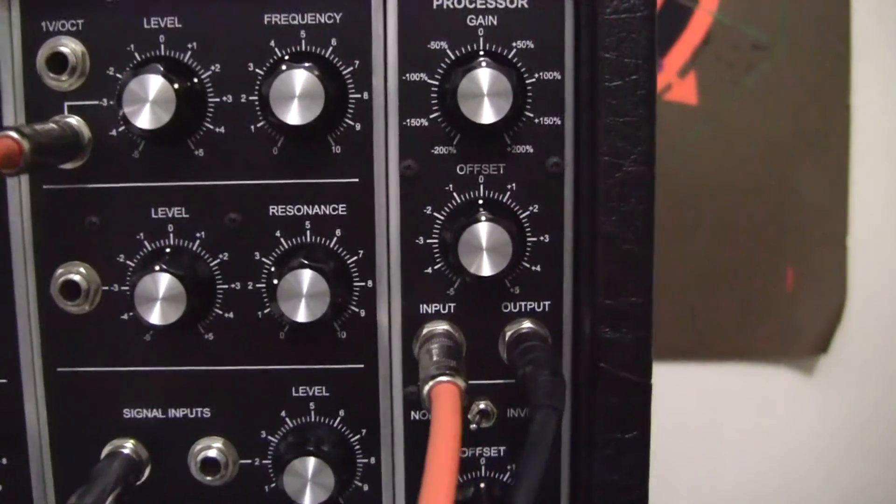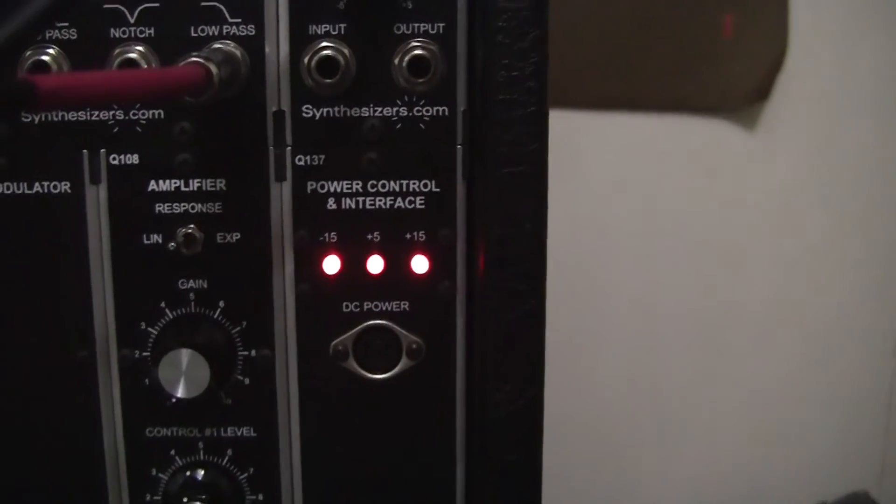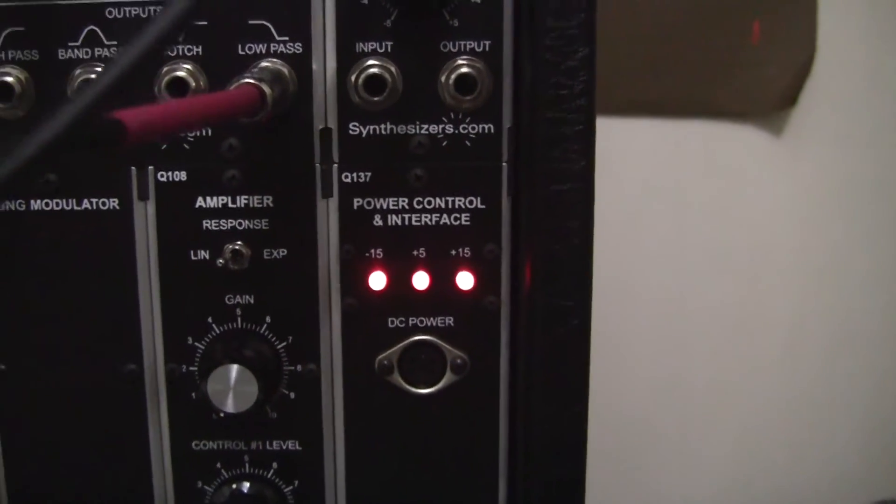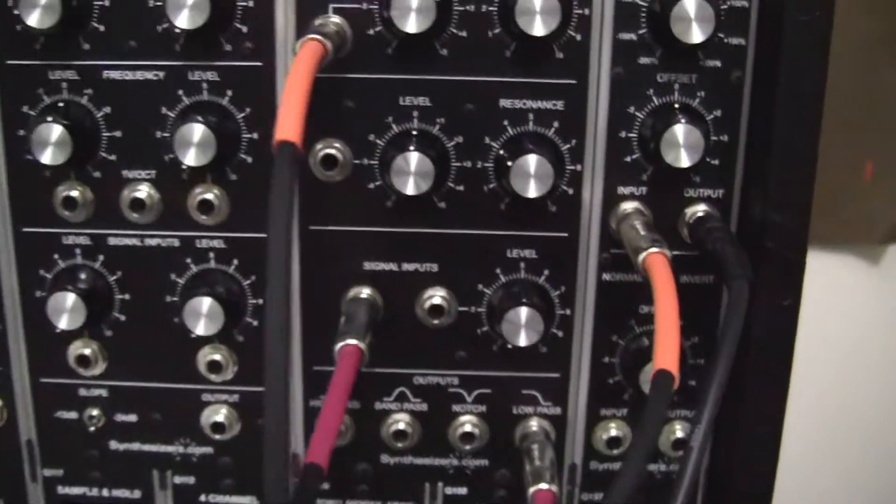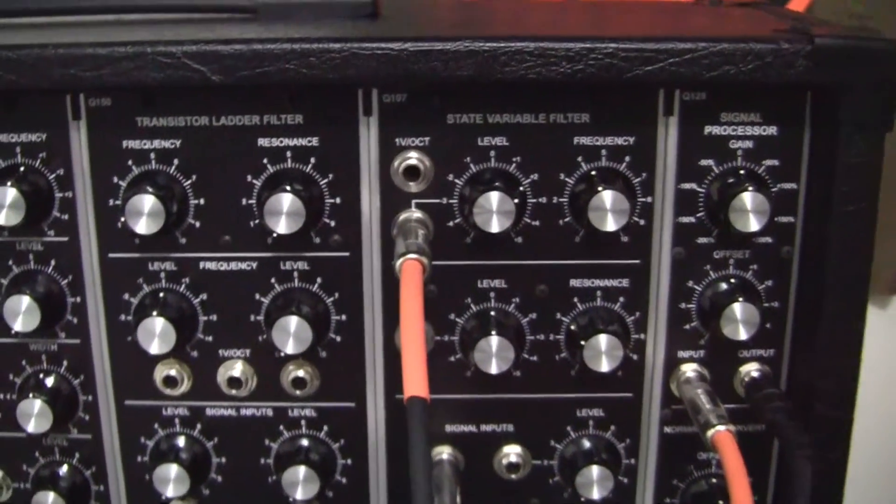Now the operational amplifiers on which these circuits are built have a negative 15 volts or positive 15 volts supplying power to them. Those are referred to as the power supply rails.